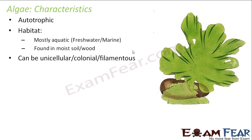Algae can be unicellular, colonial, or filamentous. Talking about the structure of an algae: it can be unicellular, that is made up of one cell; it can be colonial, meaning too many algae living together forming a colony; and filamentous means the algae structure has thin hair-like filamentous structure.